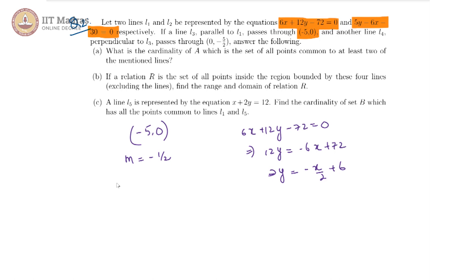If we did point-slope form on this, we would get (y - 0)/(x + 5) = -1/2, which indicates 2y = -x - 5. Therefore, x + 2y + 5 = 0 is basically our line L3.